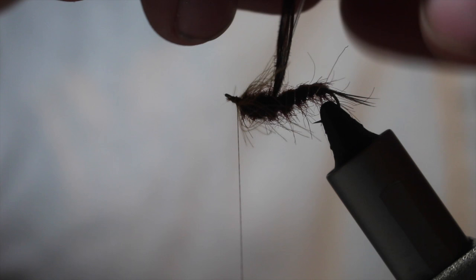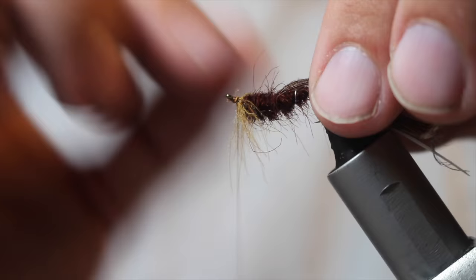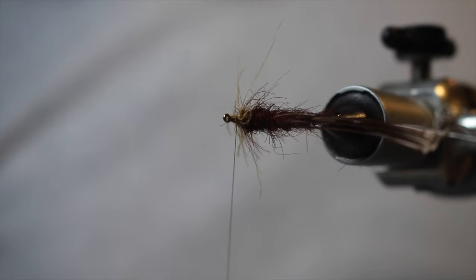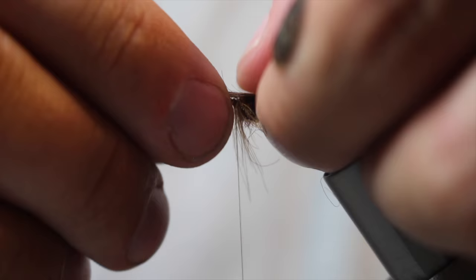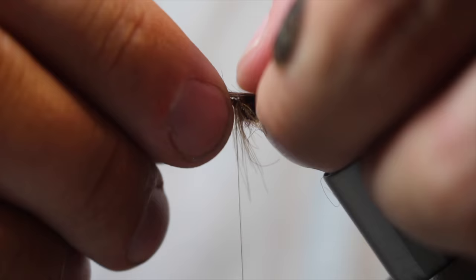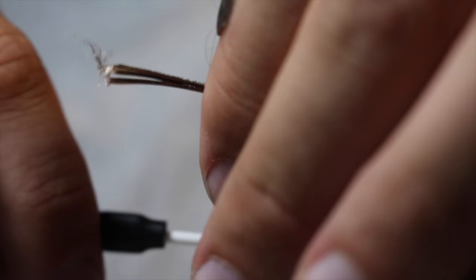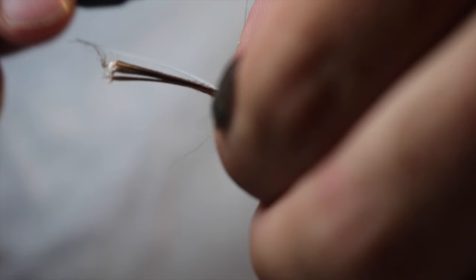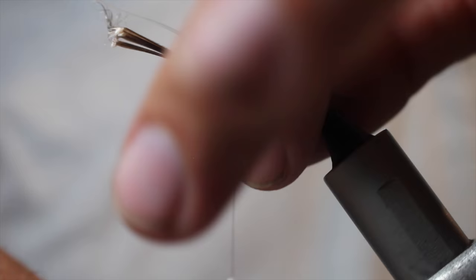A couple of turns to tidy up. And we're going to take our shell, or wing casing. Actually, before we do that, all I'm going to do is part these CDC fibers down the middle, so that they're to the side. So it creates an opening where we can get that wing case over. This actually makes those CDC fibers look more like legs in the water. It makes the nymph look a little bit more realistic. So I'm going to pull that there. One, two, three. Take that white peacock tail fiber over the top. One, two, three to hold.